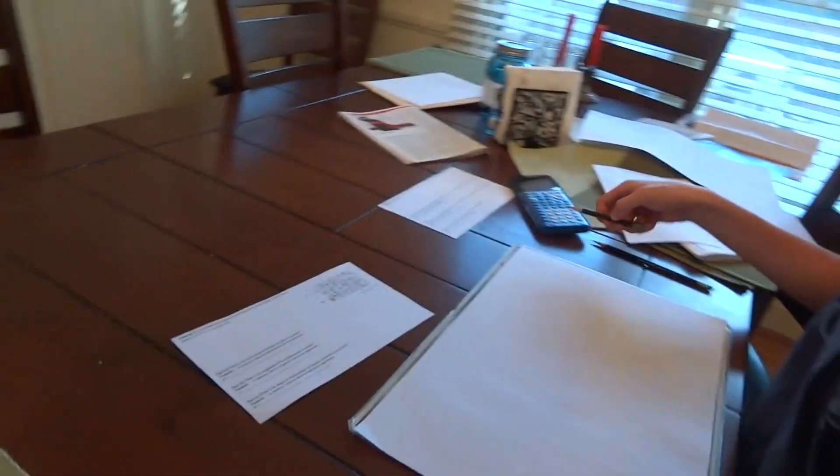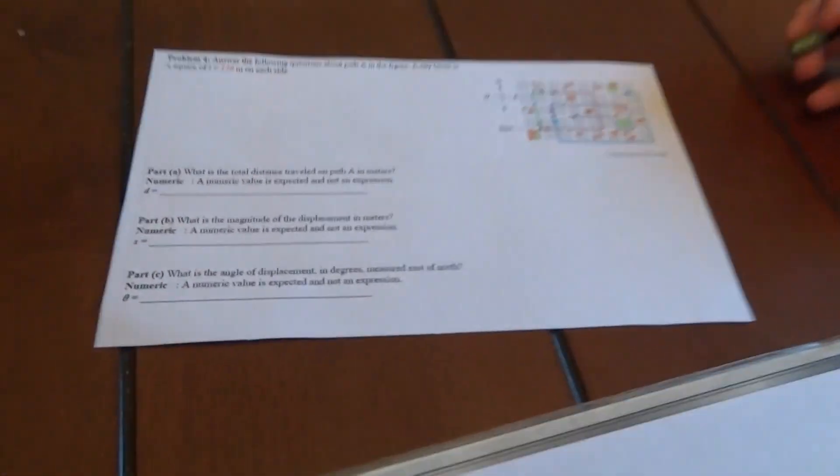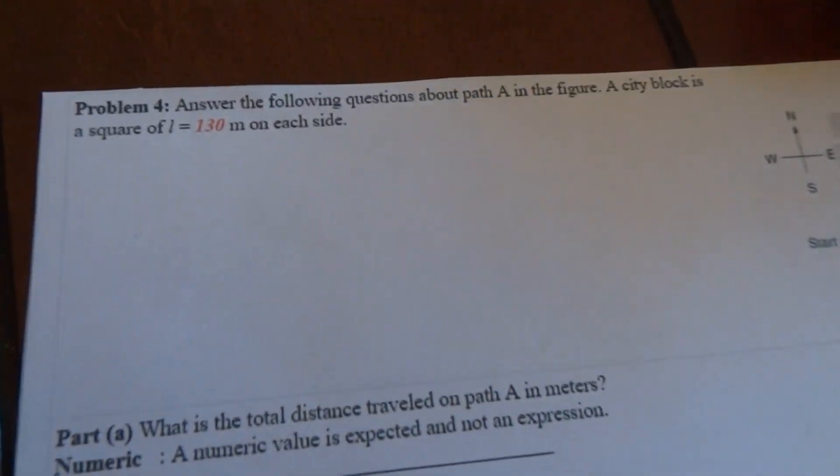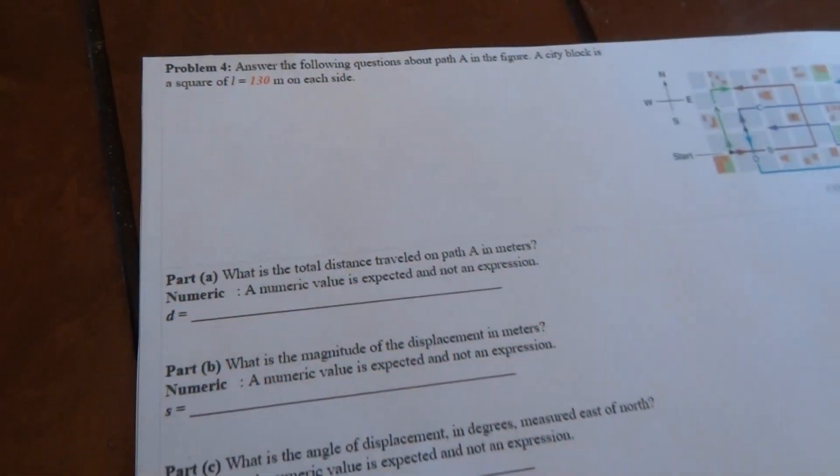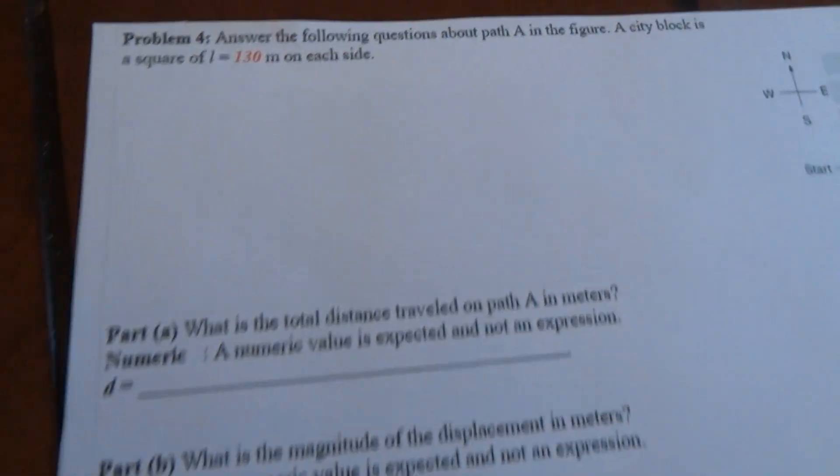I'm doing problem 4 and it says answer the following questions about path A in the figure. A city block is a square with sides of 130 meters and so this is path A here.